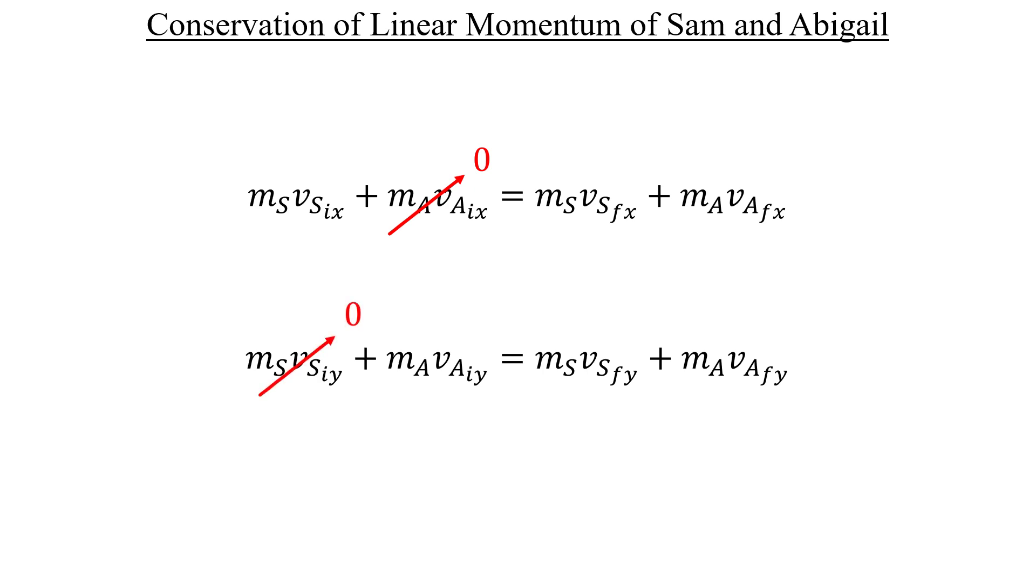With those terms removed, let's get a fresh perspective on our equations. Here we can see that we'll use the sum of the final momenta in each direction to figure out the initial speed of each person.